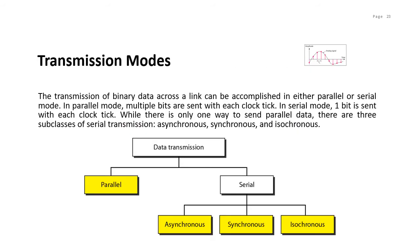One of the things we need to consider in data transmission is the wiring between devices — whether we send one bit at a time or put bits into larger groups. The transmission of binary data across a link can be accomplished in either parallel or serial mode. In parallel mode, multiple bits are sent with each clock tick. In serial mode, one bit is sent with each clock tick. There are three subclasses for serial transmission: asynchronous, synchronous, and isochronous.